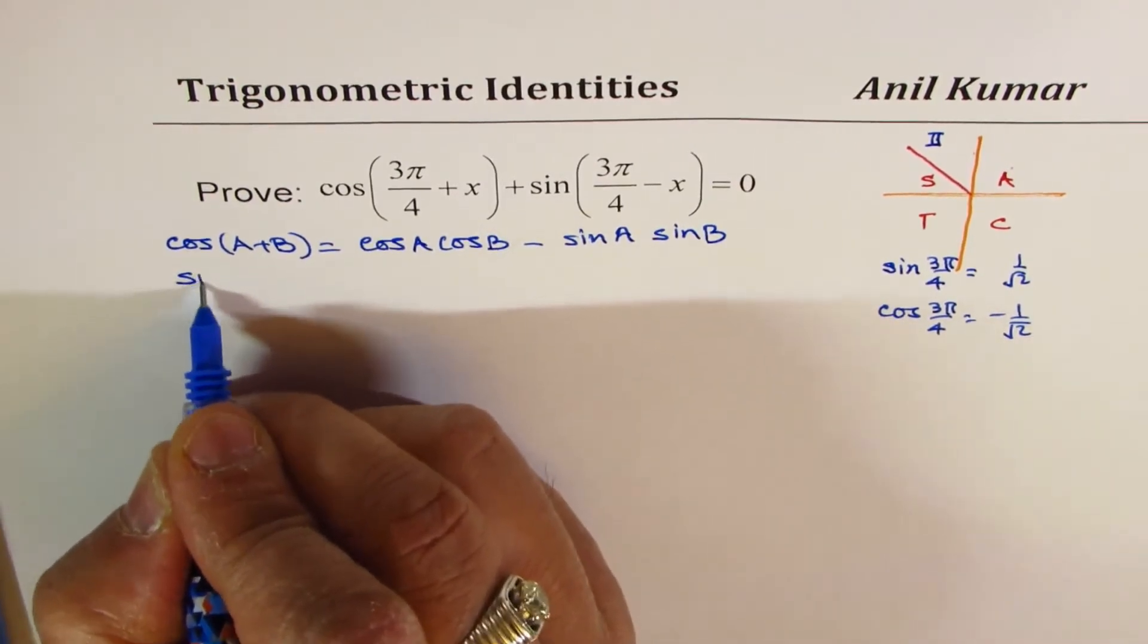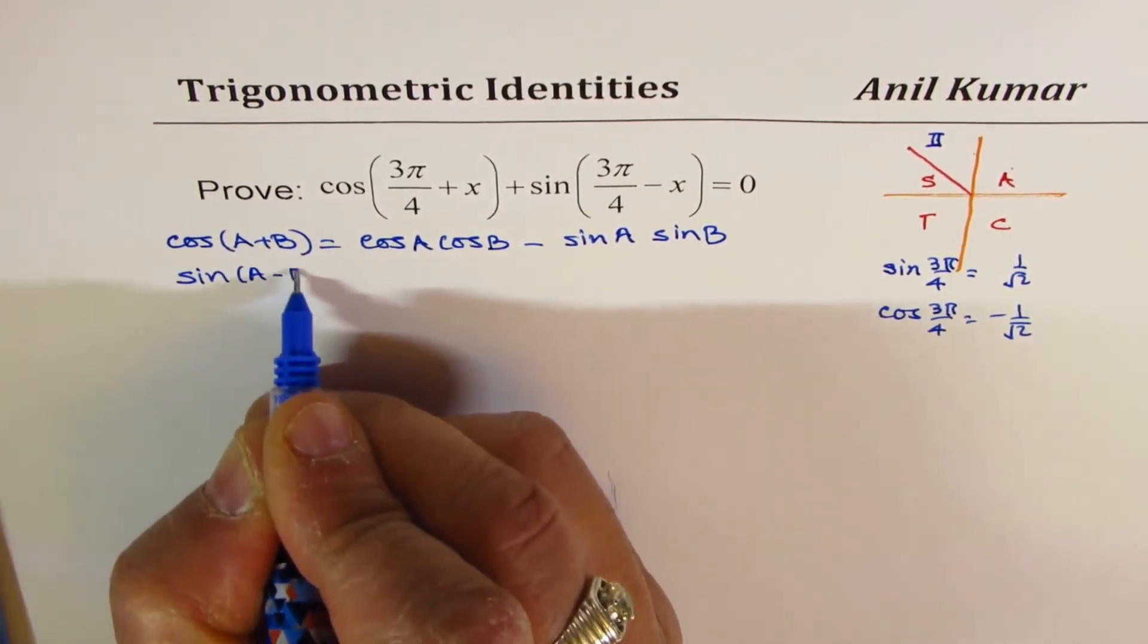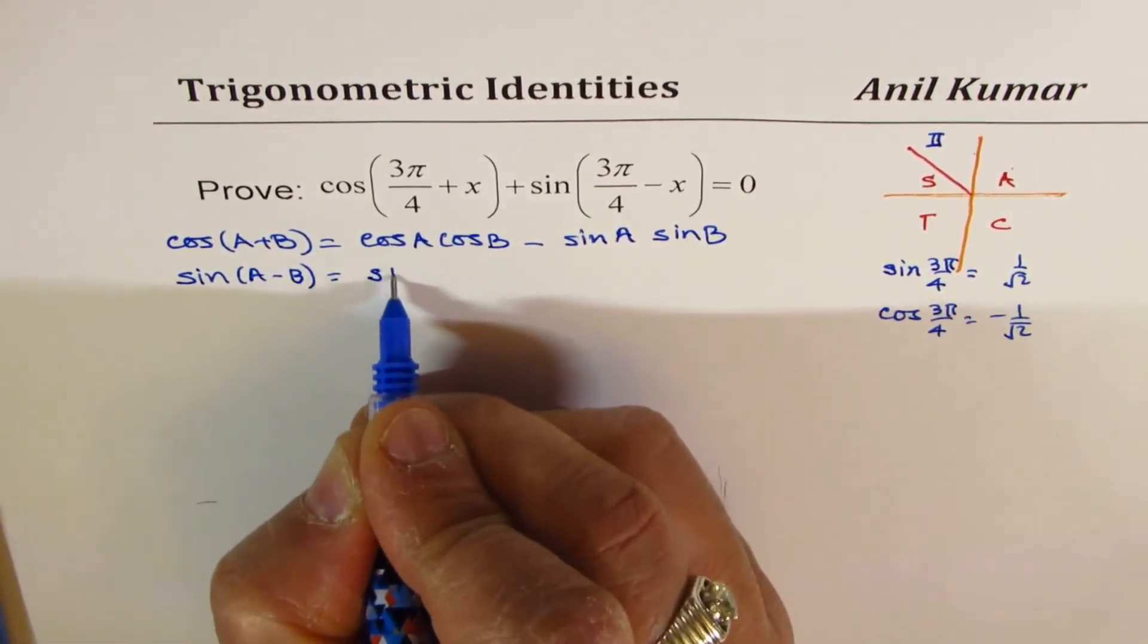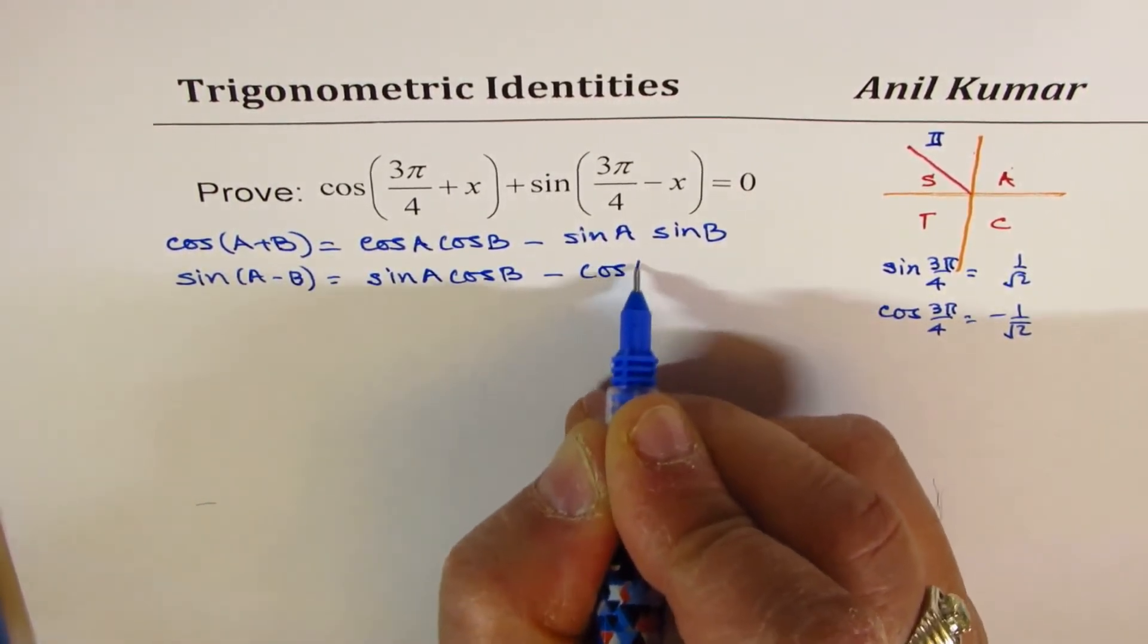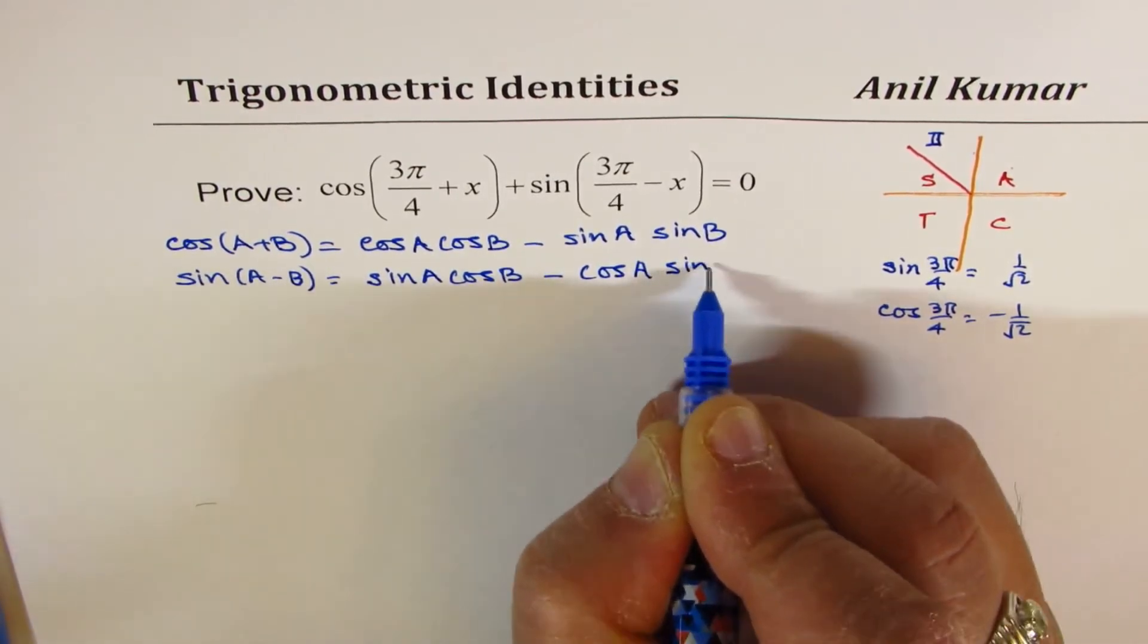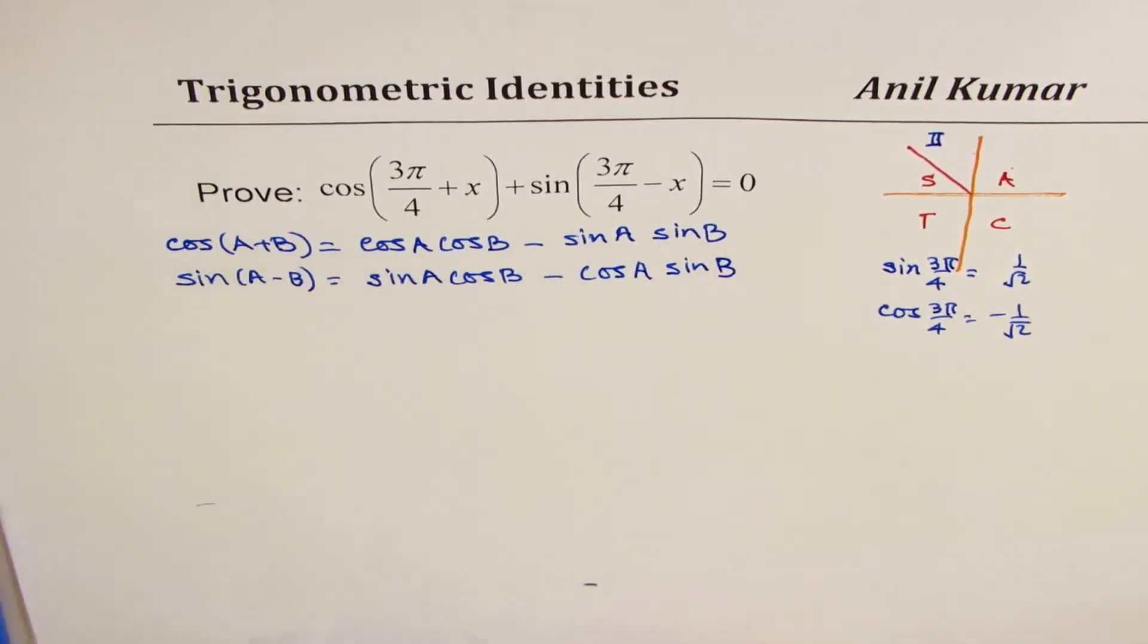And then we'll also use sin(a - b) formula, which is sin(a)cos(b) - cos(a)sin(b). With that, we should be in a position to prove this identity.